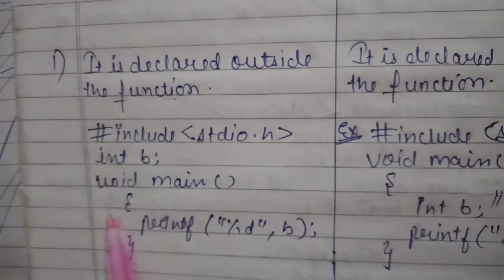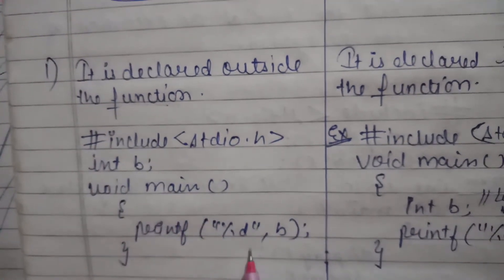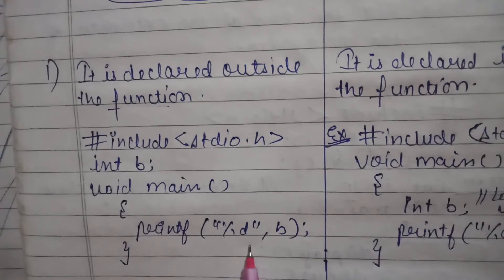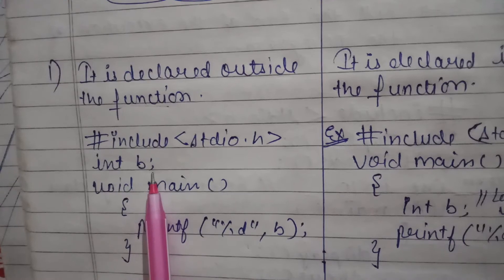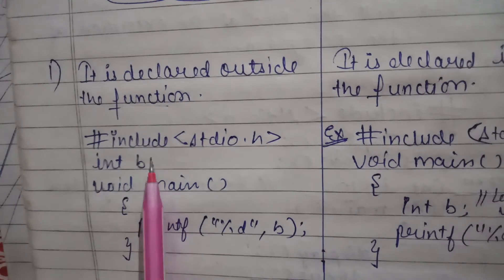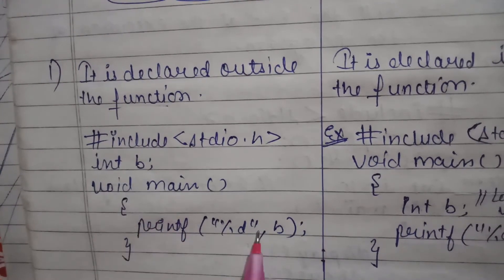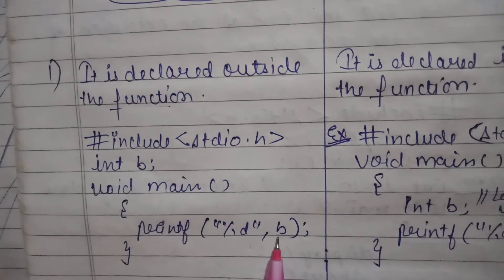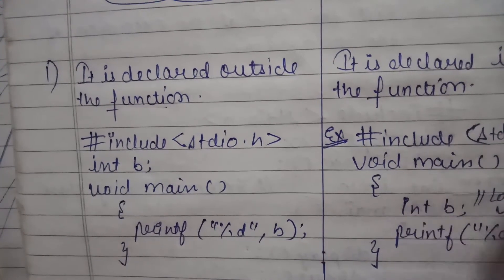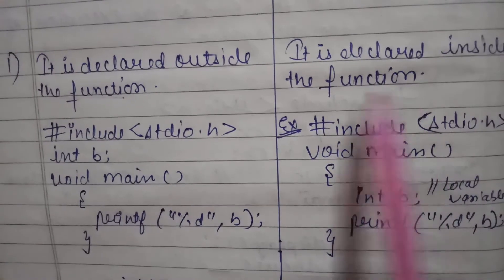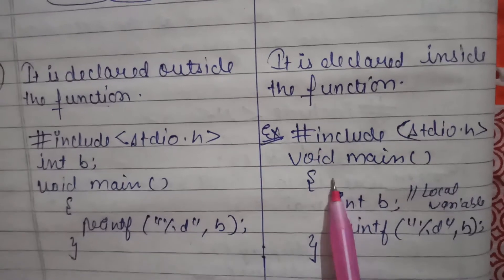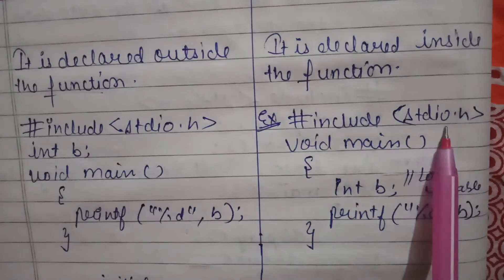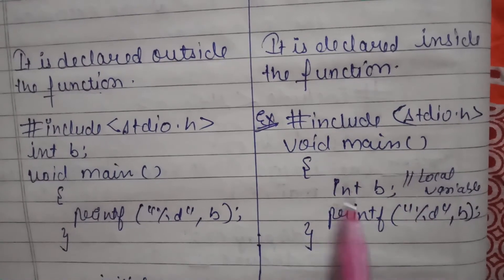For example, before void main we declare B as a global variable. B is a global variable, and it will be accessible inside the local functions. Inside the functions we also declare local variables, as seen in the code with hash include and void main.